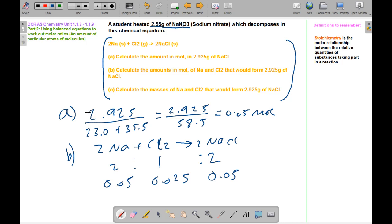Okay, so 2.925 grams, we're finding the moles of sodium chloride. So 2.925 over 23 plus 35.5 gives 58.5, and this gives 0.05 moles.